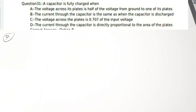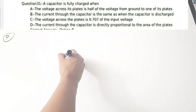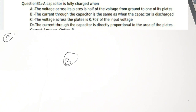Seventh question from capacitors: a capacitor is fully charged when — A) voltage across the plate is half the supply voltage, B) the current through the capacitor is the same as when it is discharged. When a capacitor completes charging, the current value equals the current when the capacitor is fully discharged. Correct answer is option B.